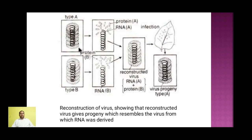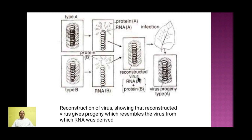As shown in the figure, type A is the virulent strain and type B is the mutated non-disease-causing strain. The proteins and RNA of both were separated. When RNA from strain A was combined with protein from strain B and this reconstructed virus was infected onto the leaf, the progeny found in the resulting disease were of type A. This meant the protein was not responsible for the disease — it was the RNA that caused the disease, even when the protein came from a different virus. This showed that RNA is acting as a genetic material.